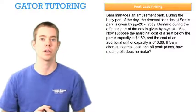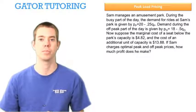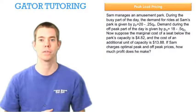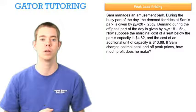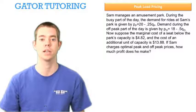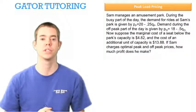We're looking at Sam's amusement park again, with the same inverse demand for peak pricing and the same inverse demand for off-peak pricing. But now suppose the marginal cost of a seat below the park's capacity is $4.82 and the cost of an additional unit of capacity is $13.88.